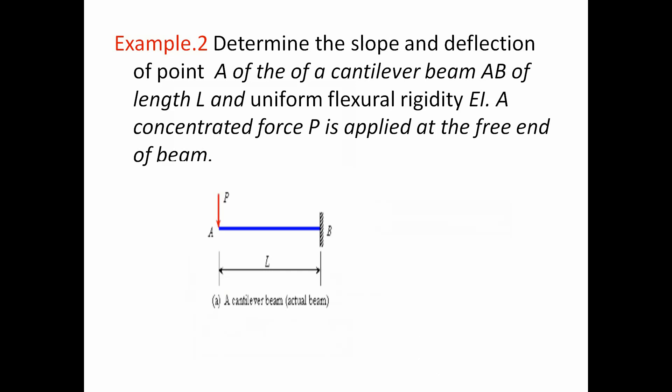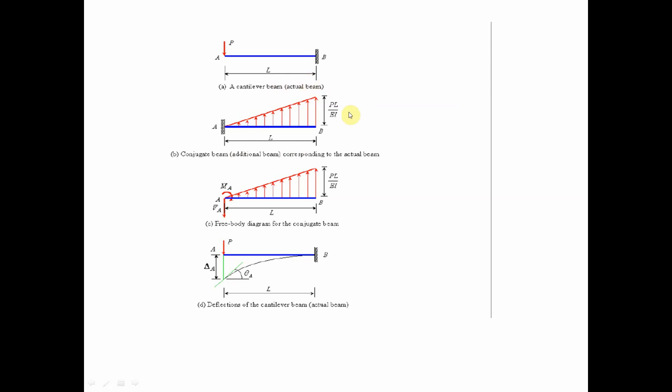Example 2: consider a cantilever beam of length L with uniform flexural rigidity EI constant. A concentrated force P is applied at the free end of the beam. The bending moment diagram for this cantilever beam with point load P at the free end is a triangle. The real beam is fixed at one end and free at the other, and it is converted to the conjugate beam — fixed becomes free and free becomes fixed.